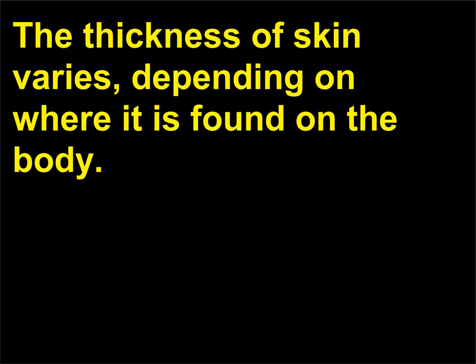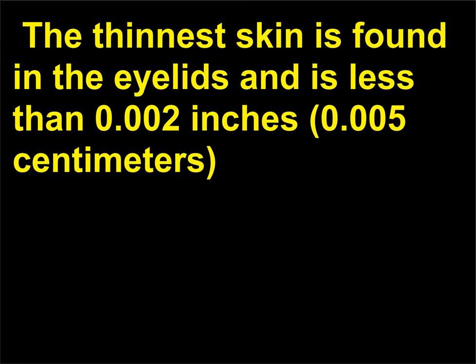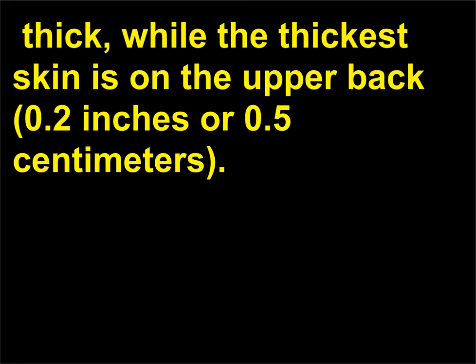How thick is skin? The thickness of skin varies depending on where it is found on the body. Skin averages 0.05 inches (0.127 centimeters) in thickness. The thinnest skin is found in the eyelids and is less than 0.002 inches (0.005 centimeters) thick, while the thickest skin is on the upper back at 0.2 inches (0.5 centimeters).